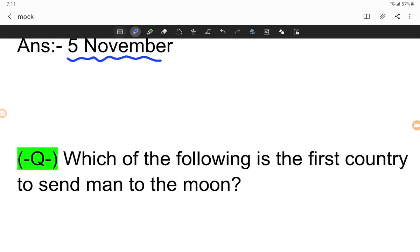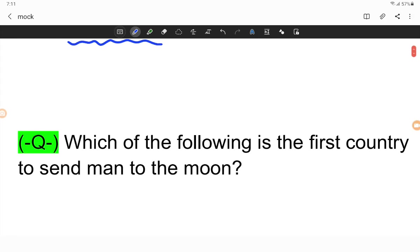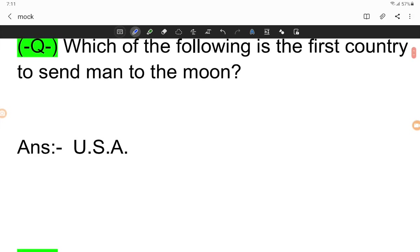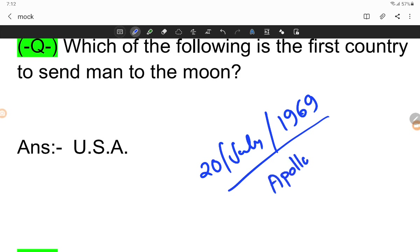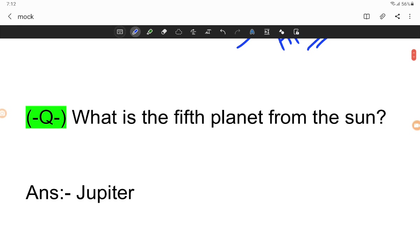Which of the following is the first country to send men to the moon? The answer is USA, United States of America. The mission was Apollo 11. What is the fifth planet from the sun? Jupiter. The order is Mercury, Venus, Earth, Mars, Jupiter.